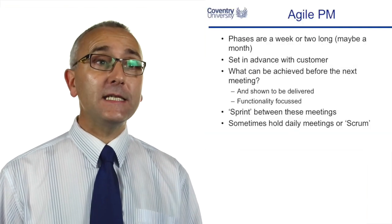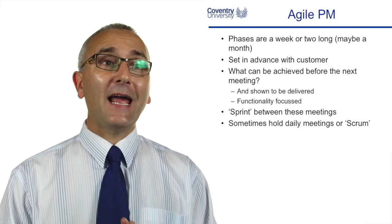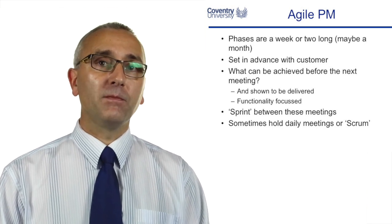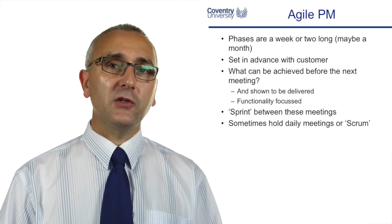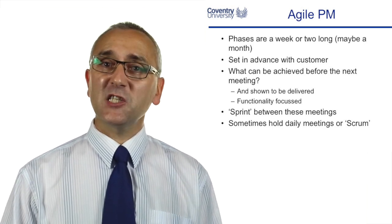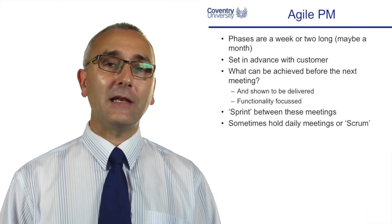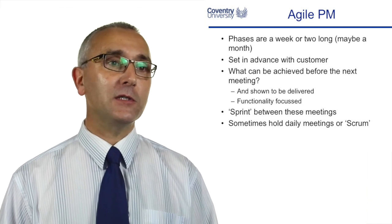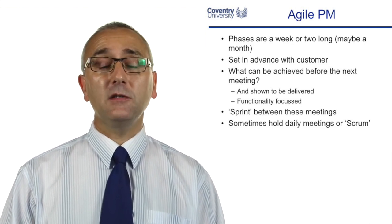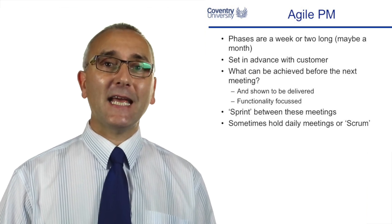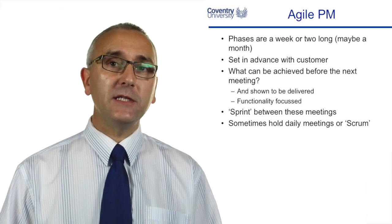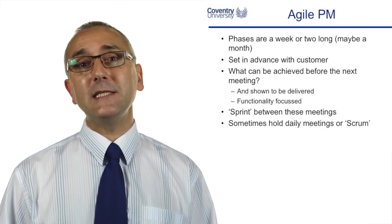In agile, the phases might be a week or two weeks long, and we have meetings with the customer to showcase what we've developed at regular periods. Instead of telling people exactly what to do, agile asks: what can you achieve before the next showcase meeting? The customer is coming back next Friday morning — what can you have done by then? What working software will be developed? It's shown at that Friday meeting, focused on the functionality the customer required, and we sprint between these meetings in a sustainable way.